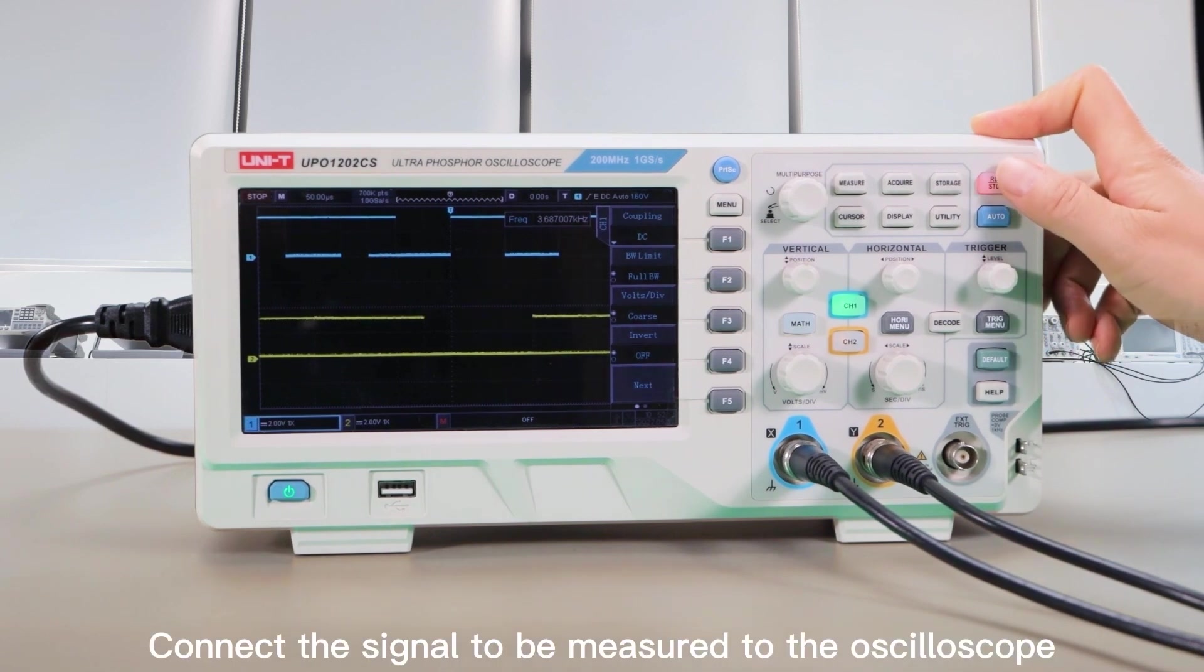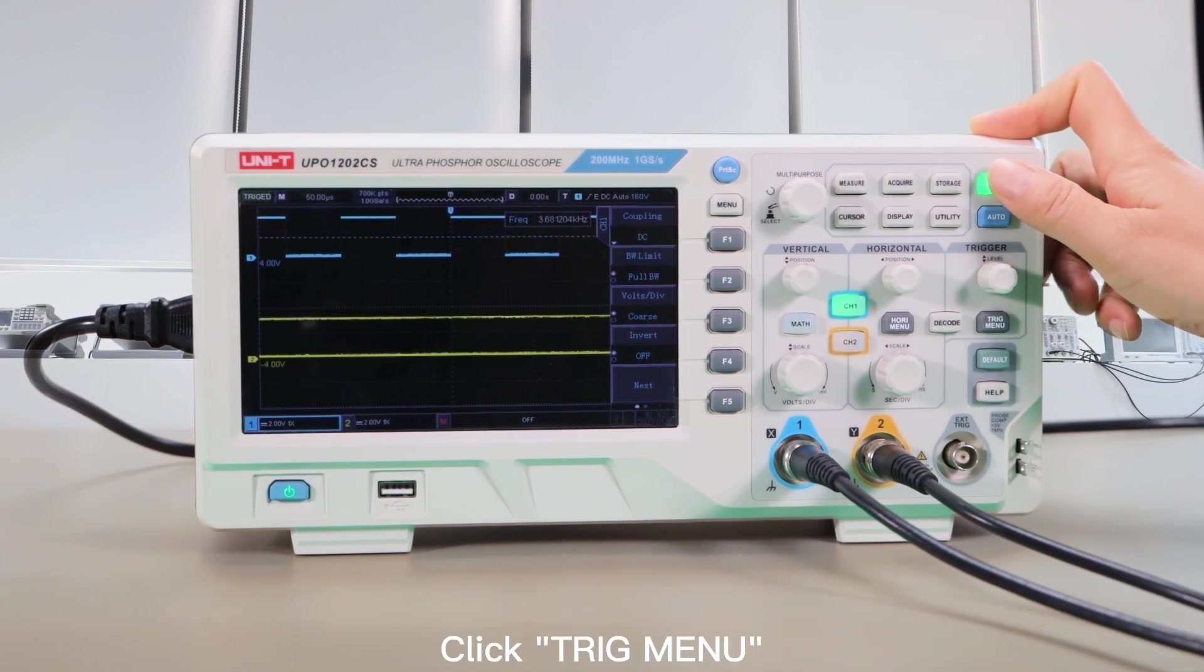Connect the signal to be measured to the oscilloscope. Click Trig Menu.